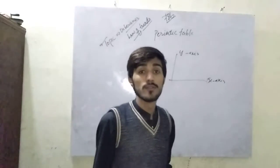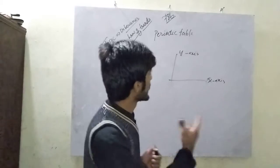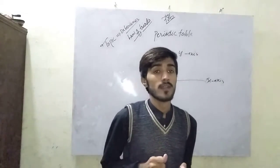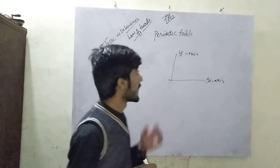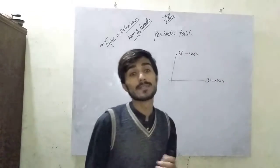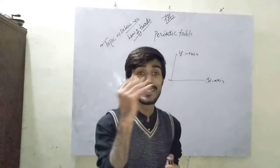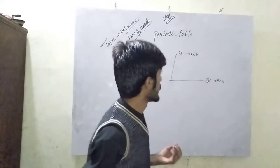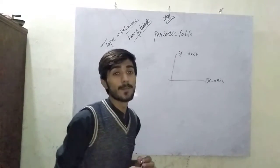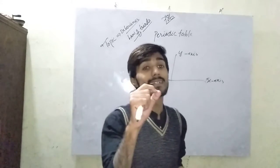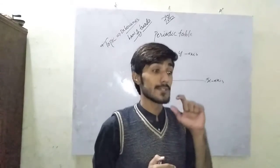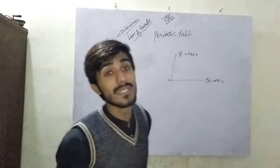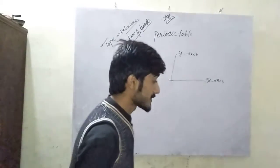Why do we study the Periodic Table? As you know, the Periodic Table is the alphabet of chemistry. First of all, we need to study the alphabet of chemistry, and then we can understand what chemistry is. So first of all, we study the Periodic Table — it makes the study of chemistry easier.